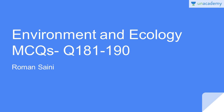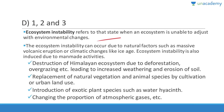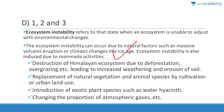Destruction of the Himalayan ecosystem, replacement of natural vegetation, and introduction of exotic species — all of these activities can lead to ecosystem instability. Ecosystem instability is the state when an ecosystem is unable to adjust to environmental changes. It can be caused by natural factors like volcanic eruption or climate change, or by man-made activities like deforestation, overgrazing, and introduction of exotic species like water hyacinth.